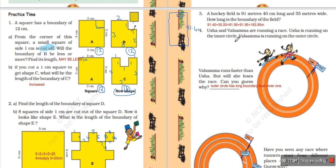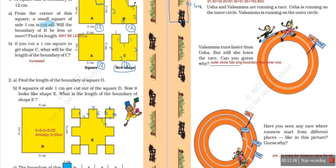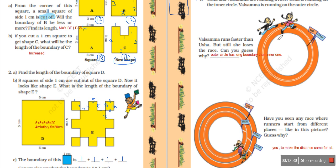Come to question number 4: Usha and Valsama are running a race. Usha is running on the inner circle and Valsama is running on the outer circle. Valsama runs faster but still loses the race. Can you guess why? Because Usha is on the smaller inner circle and Valsama is on the larger outer circle — the boundary wall of the outer circle is bigger.